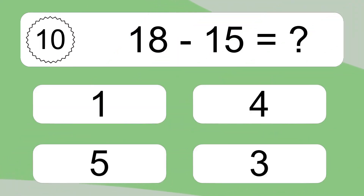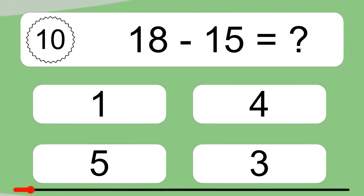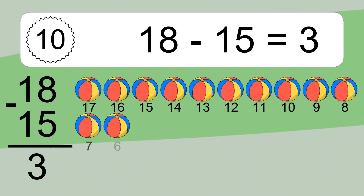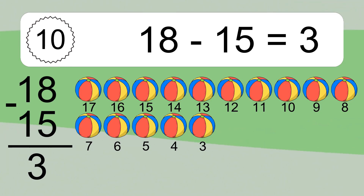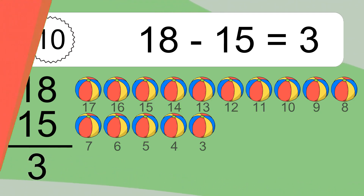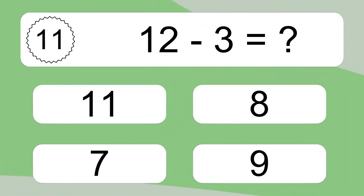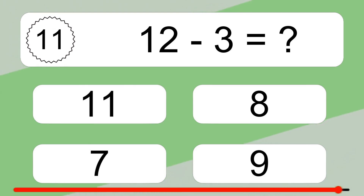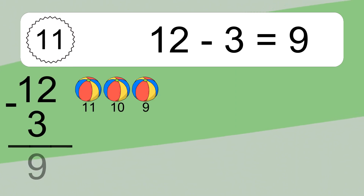18 minus 15 equals what? 18 minus 15 equals 3. Let's count it: 17, 16, 15, 14, 13, 12, 11, 10, 9, 8, 7, 6, 5, 4, 3. 12 minus 3 equals what? 12 minus 3 equals 9. Let's count it: 11, 10, 9.